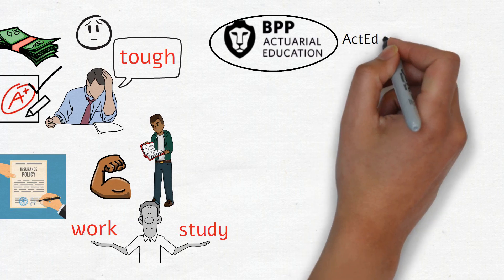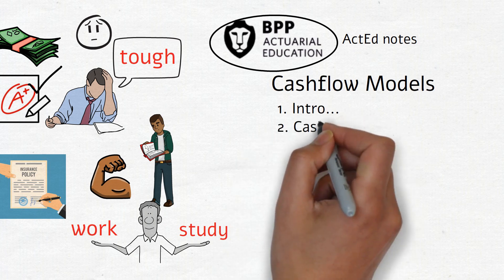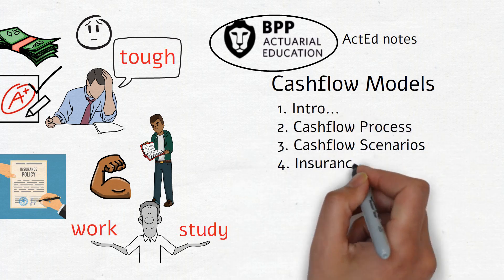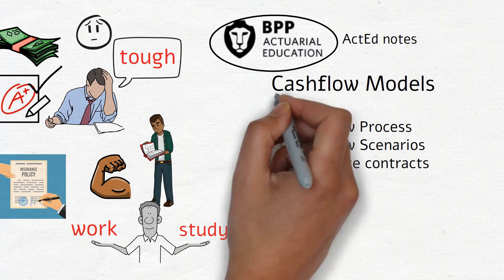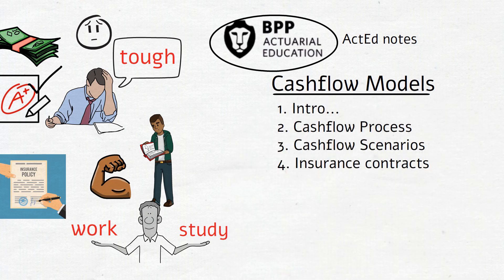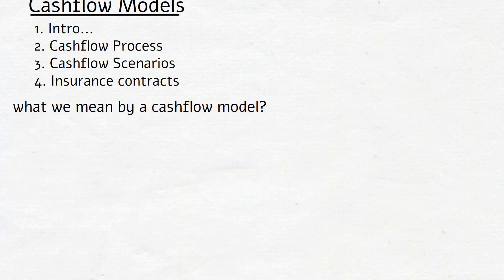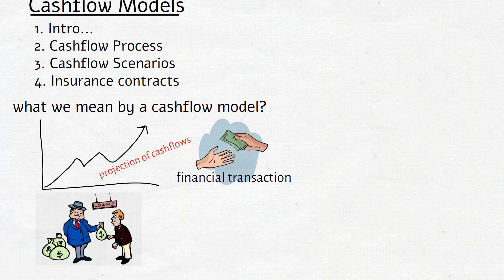In the actuarial notes, the chapter on cash flow models is divided into four sections: an introduction, a cash flow process, cash flow scenarios, and lastly a section on insurance contracts. As part of our introduction, let us try to understand what we mean by a cash flow model. The notes define a cash flow model as a mathematical projection of the payments arising from a financial transaction, such as a loan, a share, or a capital project.